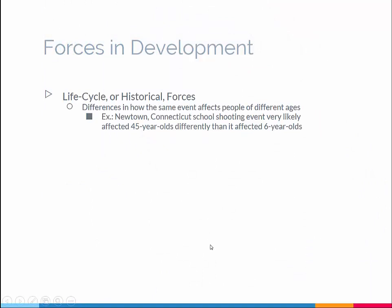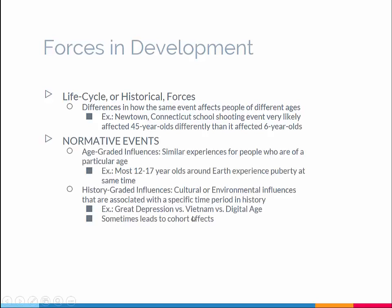Life cycle and historical forces reflect differences in how the same event affects people of different ages. For example, the school shootings in Newtown, Connecticut are very unlikely to affect a 45-year-old the same way they affect a six-year-old. Sometimes life cycle forces might be more normative. Normative events would be age-graded influences or history-graded influences. Age-graded influences refer to similar experiences for people of a particular age — for instance, most 12- to 17-year-olds around the world experience puberty at the same time. For history-graded influences, cultural or environmental influences associated with a specific time period in history will also influence development.